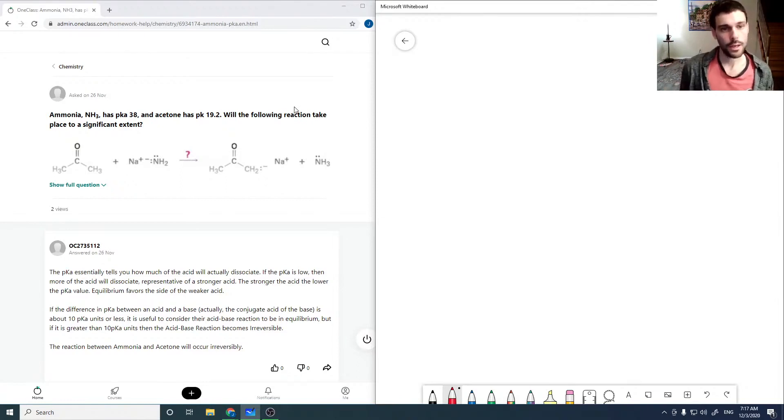Ammonia has a pKa of 38 and acetone has a pKa of 19.2. Will the following reaction take place to a significant extent?